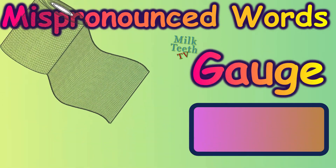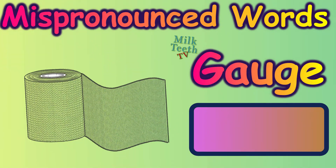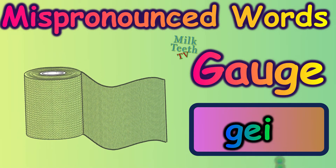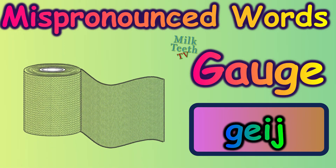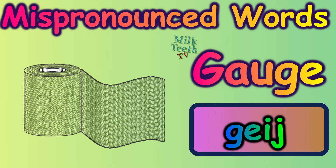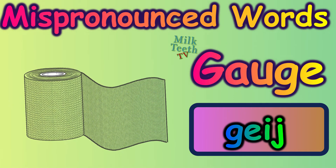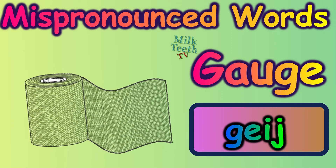Now do you know what this is? This is a kind of bandage that we use for first aid. It is called gauge — not gauss. It is gauge. Say it once more: gauge.